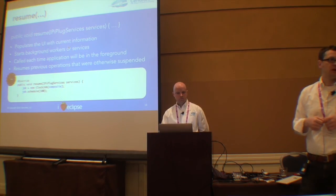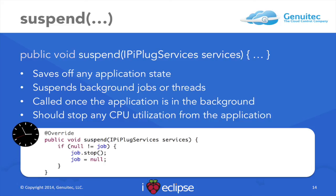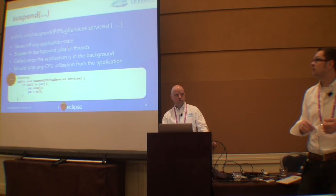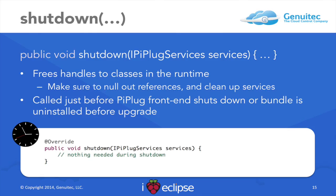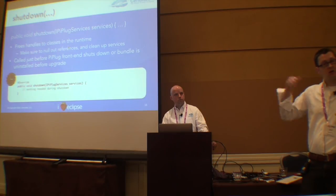The suspend method should stop those background threads and stop using the CPU, because you don't want to be using the CPU while you go to a different app. You can think of it like a cell phone interface — you don't want to be using CPU while you're not using that app. And then finally there's the shutdown, which is called when we unload the bundle. The point is to get rid of all references so that OSGI can cleanly unload that bundle. Eclipse has been trying to do dynamic bundle unloading for years, and when you're in a really lightweight situation like this, it's really simple to do — it's much harder to do in the IDE.